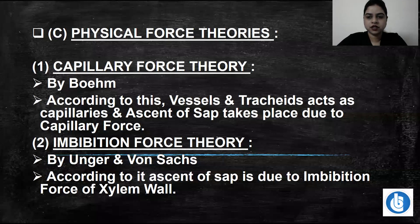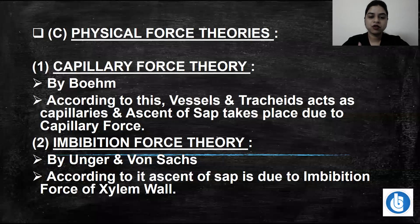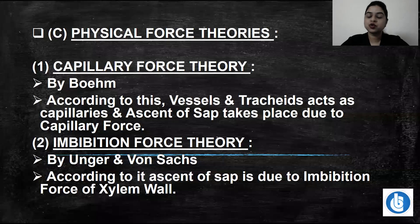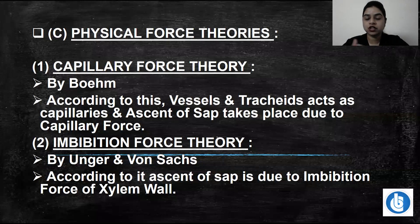So this is where we stopped. We had to talk about physical force theories. The first theory is called the capillary force theory. Capillary water — the root cells are inside water droplets, and such water molecules are called capillary water.